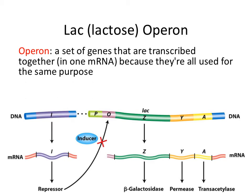How many genes does it take for a bacterium to digest lactose? Three — they're called lacZ, lacY, and lacA. They're all part of an operon, meaning they all get transcribed at the same time. They're all three genes necessary for a bacterium to process lactose, and the bacterial genome has all three organized right next to each other on the chromosome. When a bacterium needs to process lactose, it senses lactose in the medium, does one transcription event, and transcribes all three genes at the same time.